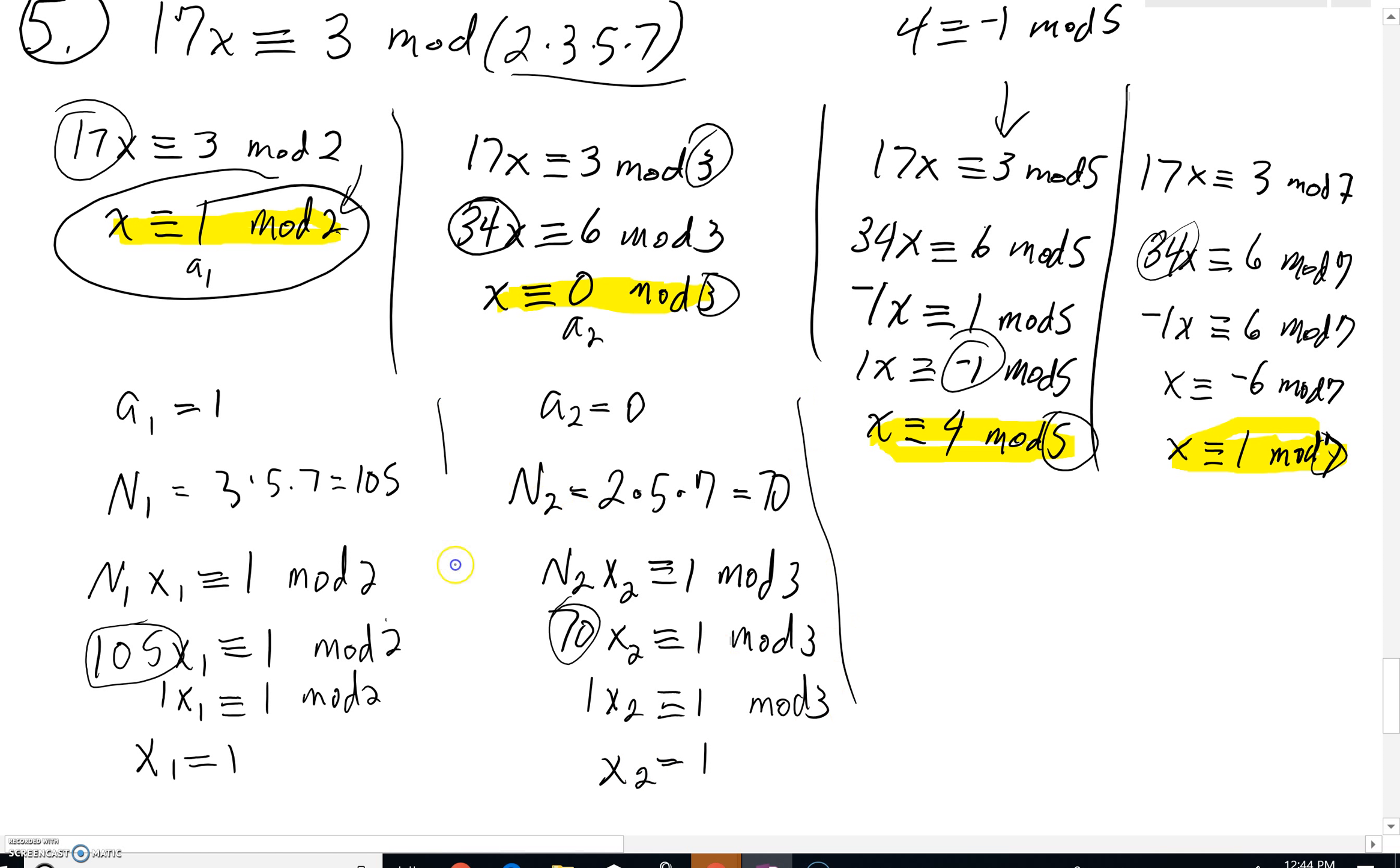Then we could keep going over here. What's your a sub 3? Your a sub 3, you could see right here, is a 4. a sub 3 is a 4. What's n sub 3? It's all of your mods multiplied together, except for this particular mod of 5. It's 2 times 3 times 7. Very quickly, we can see where we're heading with that. 6 times 7 is 42.